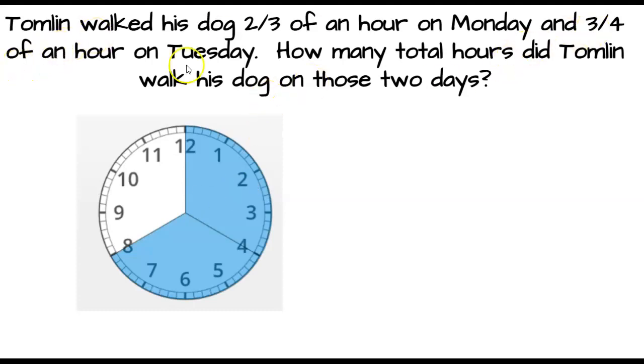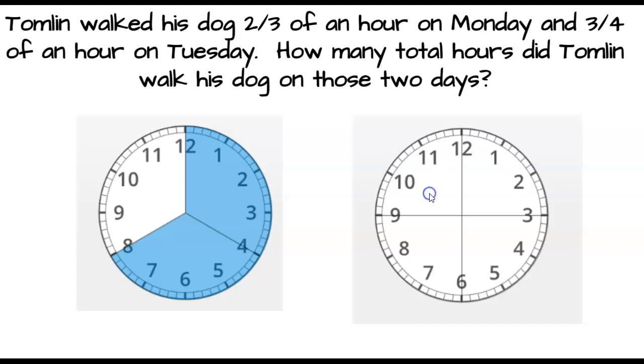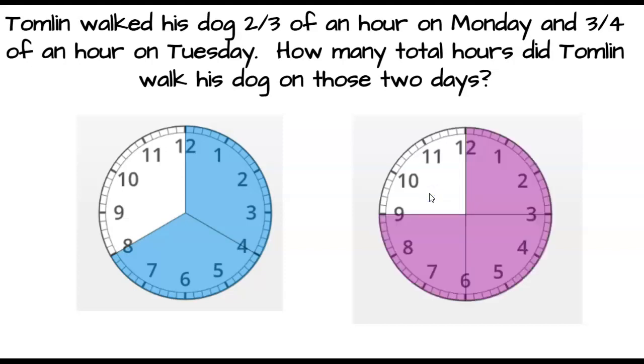All right. And then on Tuesday, we had 3/4 of an hour. So let me get a clock and partition it into fourths. And then let me color in 3 of those 4 pieces. So far, so good. Now I just need to figure out what am I going to do with these two numbers? Let's see. I want the total hours of both days. So what do you think it is? If you don't know, pause and think about it. And then come back. Did you pause? Are you taking this seriously? I hope so. So we want the total hours. We're going to add. I hope you got that.